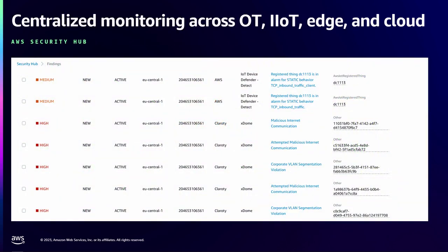This is an example of monitoring OT as well as IoT devices. In this Security Hub console screenshot, you can see AWS IoT Device Defender alerts from IoT devices alongside OT security alerts from our partner solution, Clarity X-Dome — IoT events and OT security events visible together in Security Hub.